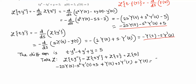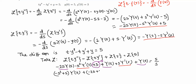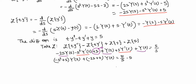The right-hand side is 5/s. Combining like terms on the left: the Y'(s) terms give (negative s² + s)·Y'(s), and the Y(s) terms give (negative 2s + 1 + 1)·Y(s) = (negative 2s + 2)·Y(s). Moving the constant 5 to the right side gives 5/s minus 5. This is a first-order linear differential equation in Y(s).